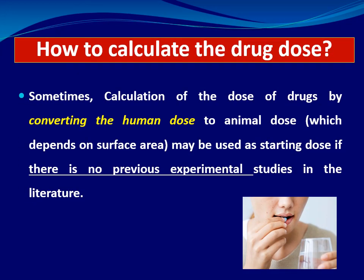Sometimes the only available method is human dose conversion to animal dose. This happens when there are no previous experimental studies in the literature on this drug in animals. If I can't find any previous research in rats, mice, or other animals, I look at the human dose and convert it to the animal dose using the FDA table — treating it as a starting dose — and I can then perform successive doses to determine the most effective dose for my mechanistic study.